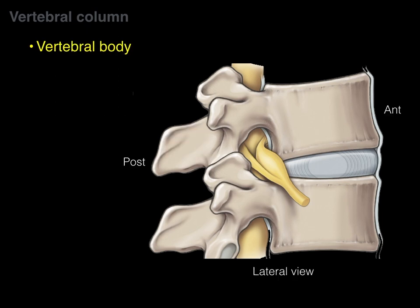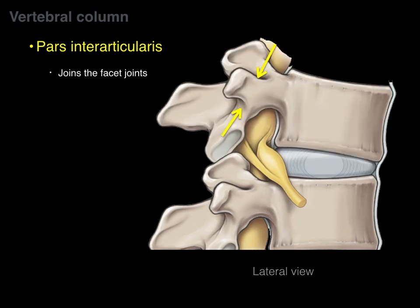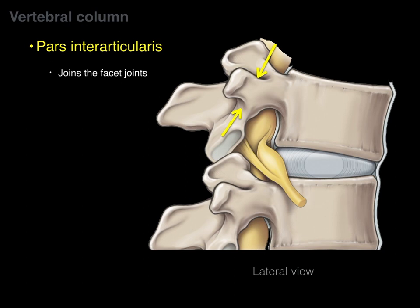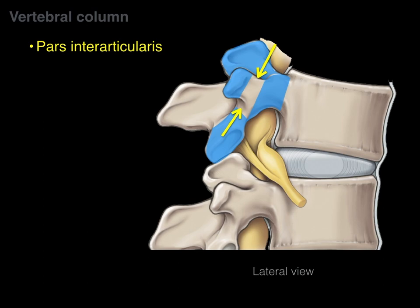The vertebral body is located anteriorly, while the spinous process is posterior. The pars interarticularis is located between the superior and inferior facets and the transverse process and pedicle — that is where we find the pars part of a vertebra.